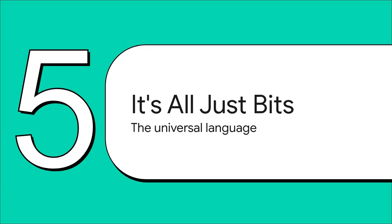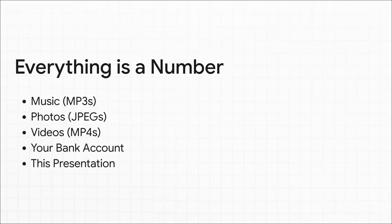Okay, let's recap. We've seen that numbers are just bits, and we've seen that text is just a code for numbers, which are made of bits. Are you starting to see the pattern here? Let's bring it all home and see how this one simple concept is the universal language for absolutely everything. That mp3 file — your favorite song? It's just a massive list of numbers that describe the sound waves. A photograph? It's a grid of millions of numbers, with each number telling a pixel what color to be. Videos, the money in your bank account, even this very presentation you're watching right now — at the end of the day, it's all just carefully organized sequences of ones and zeros.